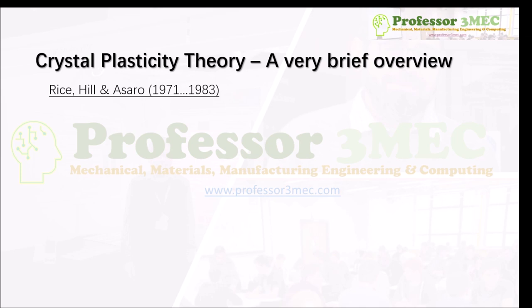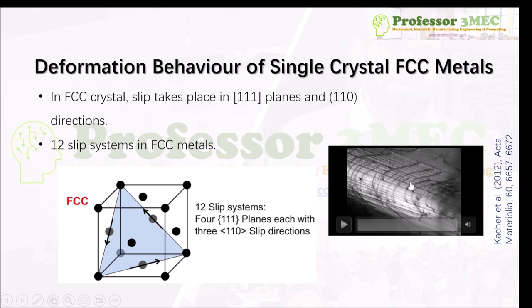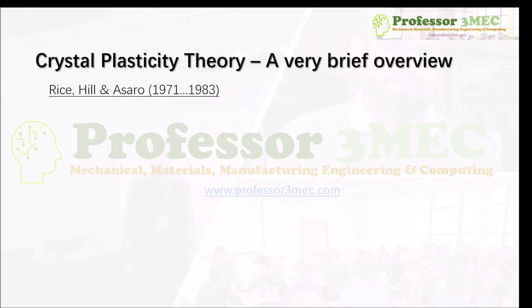There are many different length scales involved. You can model everything based on dislocation density — monitoring the evolution of dislocations, how they move, interact, and evolve during deformation — then find the slip in each specific system due to those dislocation motions. Once you know the slip rate you can transform it to a plastic strain and use a typical plasticity theory to compute stresses. We are going to use a very widely used crystal plasticity theory developed by Rice, Hill, and Asaro.